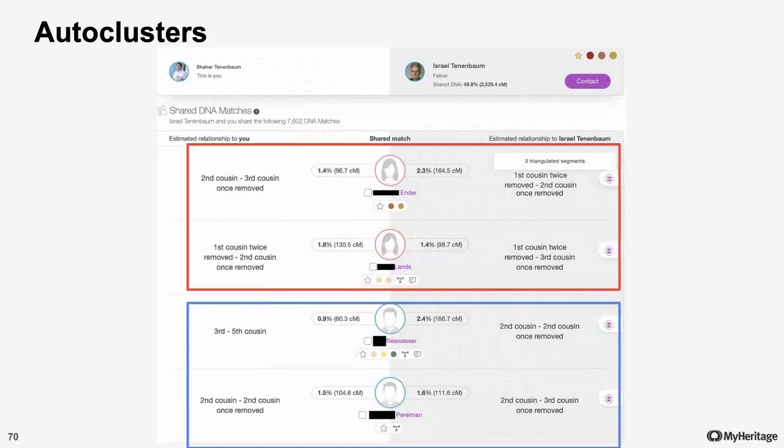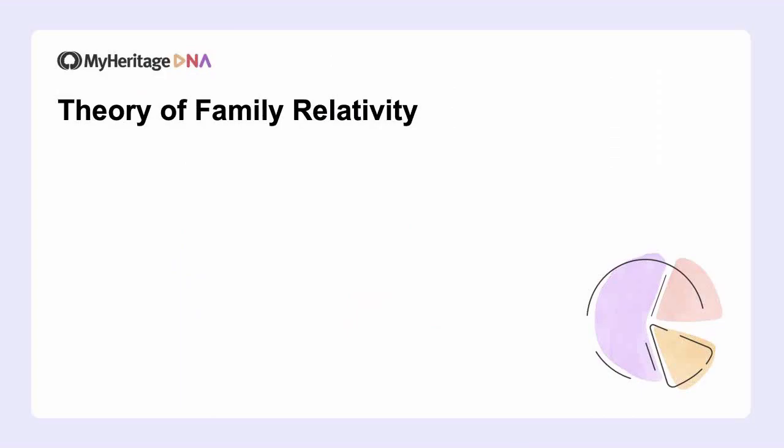All of these tools can help you find that elusive common ancestor, but they do require some genealogical work. They don't provide you the common ancestor on a silver platter. However, the last tool I want to talk about today sort of does — this is, of course, Theory of Family Relativity.